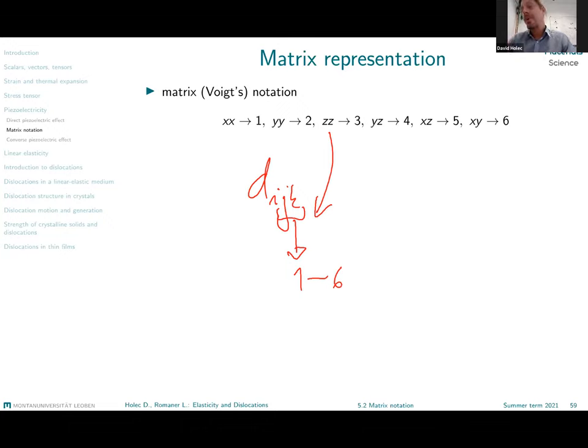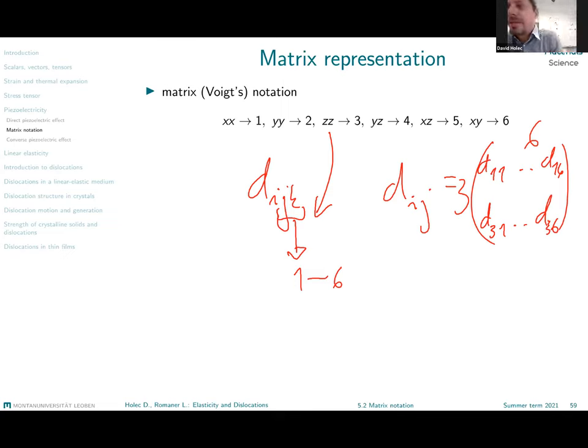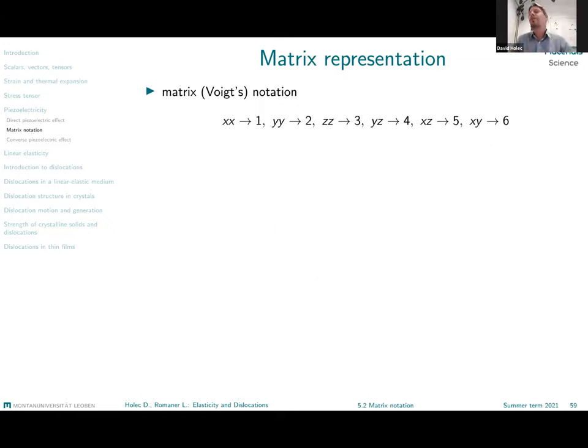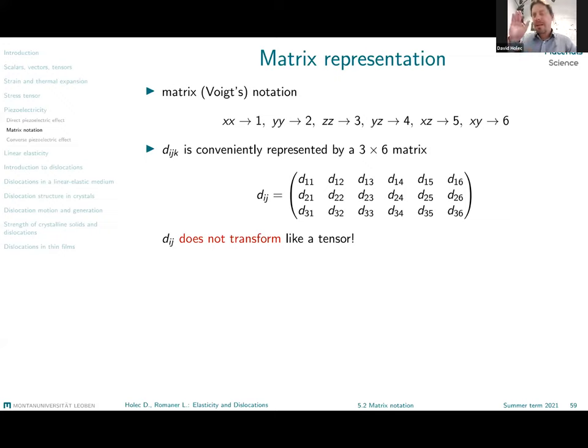And so we would end up with just two index piezoelectric object which is now a matrix three times six, d11, d12 to d16, d31 up to d36 right, and that's something that is easier to be represented. Of course I can easily write on a piece of paper these 18 numbers, it's a matrix three by six, rather than to write the 27 numbers arranged in a three-dimensional cube, right, three-dimensional matrix.